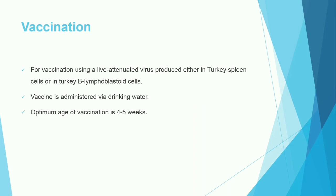For vaccination against turkey hemorrhagic enteritis, a live attenuated virus vaccine is produced in turkey spleen cells or turkey B-lymphoblast cells. The vaccine is administered via drinking water, and the optimum age for vaccination is four to five weeks.